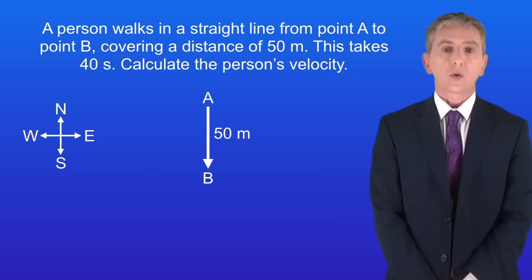So here's a typical question. A person walks in a straight line from point A to point B covering a distance of 50 metres. This takes 40 seconds. Calculate the person's velocity. And I've given you a compass here which you'll need. So pause the video and try this yourself.